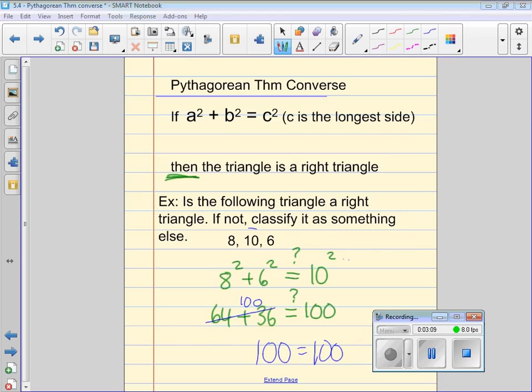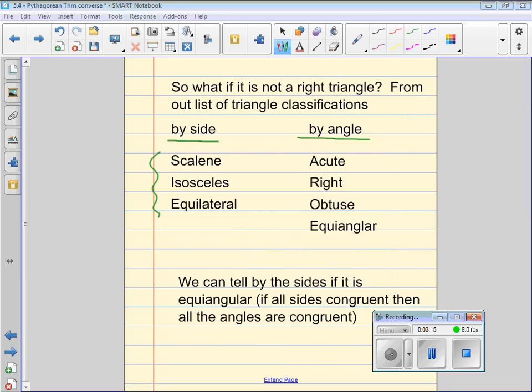Indeed, it is a right triangle because the left side equals the right. So yes, it's a right triangle. Looking back at the list, if we were to find out that it wasn't a right triangle, we could certainly look at the sides. If all three sides were the same, then we would know it's equilateral. So if I saw a triangle sides given to me like a 3-3-3 or something like that, then I would know it's an equilateral triangle.